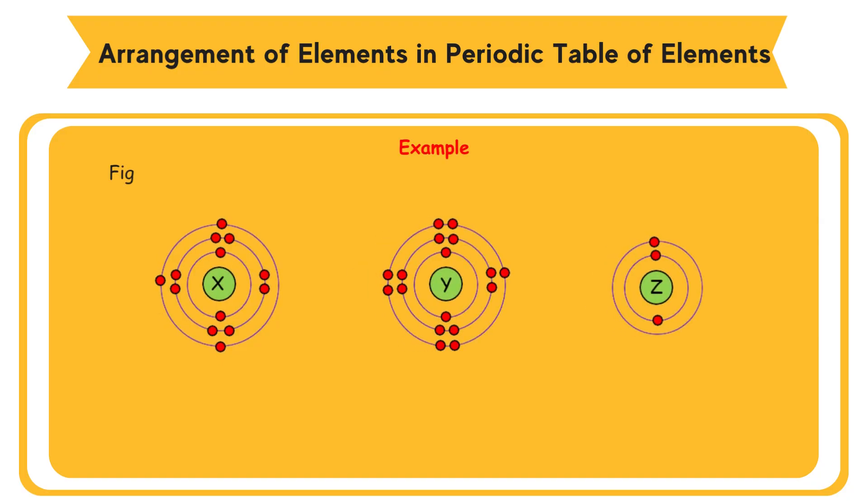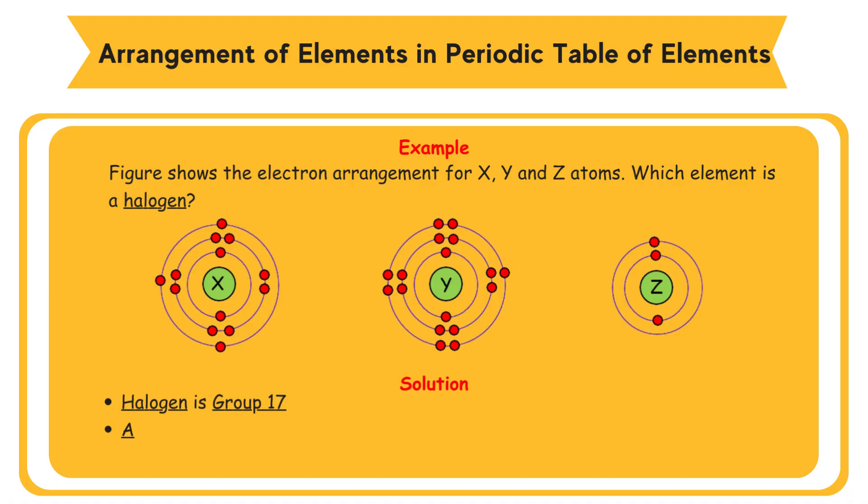Example: Figure shows the electron arrangement for X, Y, and Z atoms. Which element is a halogen? Solution: Halogen is the specific name assigned to group 17. All halogens have 7 valence electrons. Y atom has 7 valence electrons.